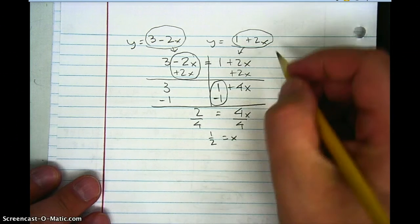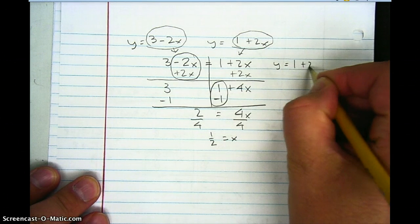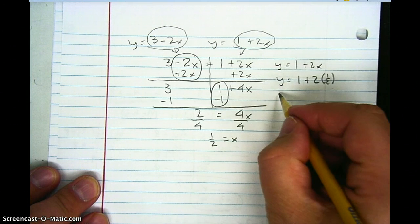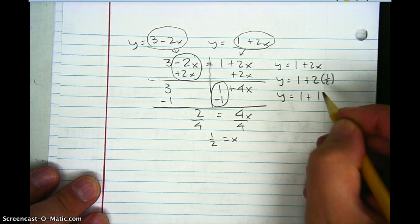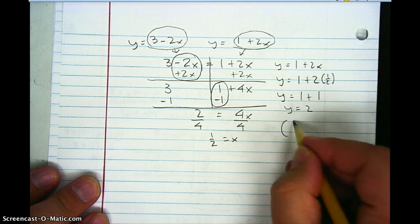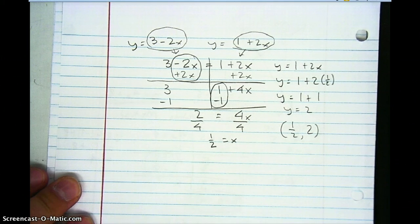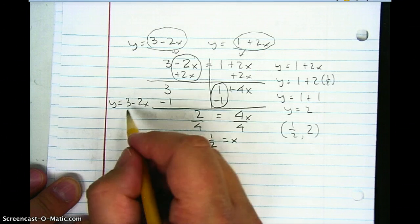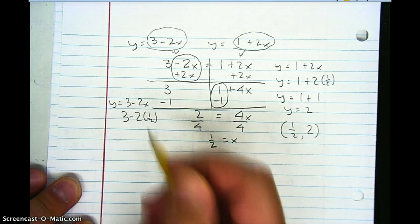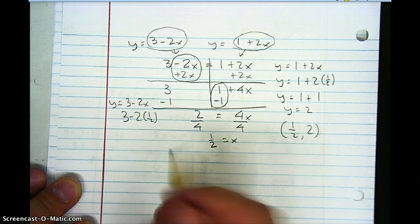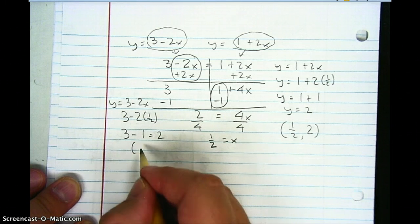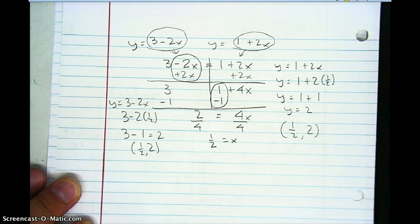Plugging x equals one half into y equals 1 plus 2x: y equals 1 plus 2 times one half, which is 1 plus 1, so y equals 2. The point is one half, 2. Verifying with the other equation: y equals 3 minus 2 times one half, which is 3 minus 1 equals 2. Both equations give the point one half, 2. No matter which equation you use, you get the same answer.